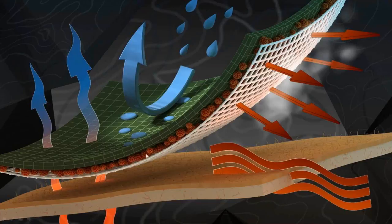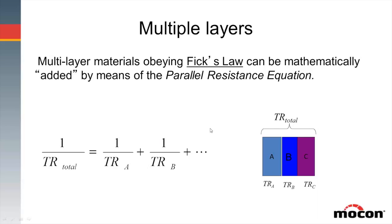Multi-layered structures — maybe polyethylene, a metalization, and tie layers — can be handled by measuring the bulk transmission rate through the entire structure very easily. Solubility becomes harder to measure for multi-layer structures because each layer has its own innate property. However, if you've got materials that obey Fick's law, you can mathematically add them together using what we call parallel resistance. If you've got total material A plus B plus C and you know the innate transmission rates of each piece, they can be added together. This is a useful tool when engineering materials for initial design or structure.